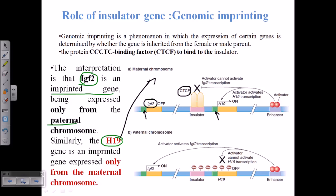The insulator and insulator binding protein will block the attachment of this enhancer sequence or activator protein with the promoter of IGF2. We only need the expression of H19 from the maternal chromosome, and IGF2 must be expressed from the paternal one. So we need to block the expression of this gene, and we can do this using the insulator sequence with the help of insulator binding proteins.